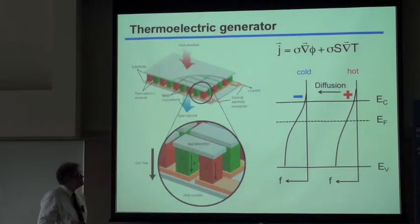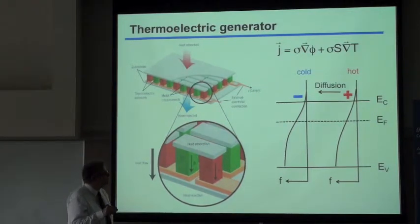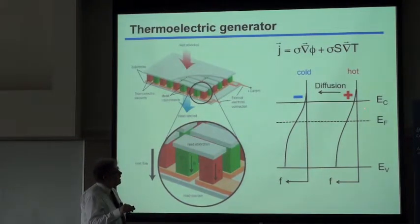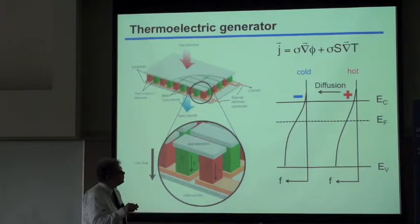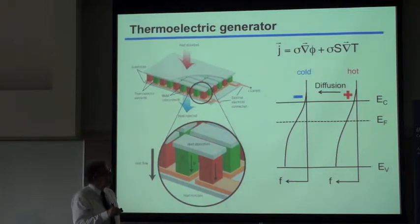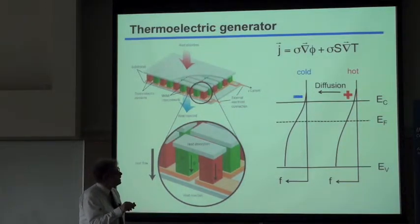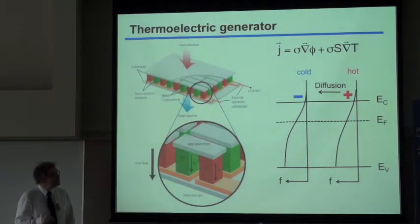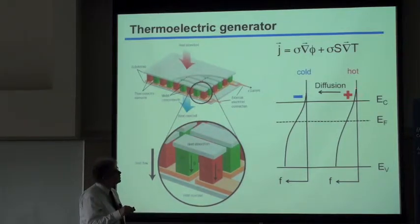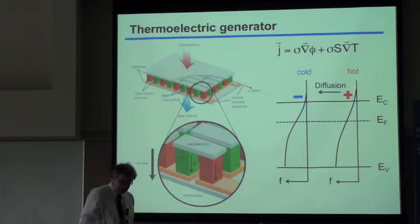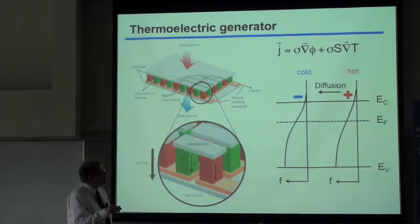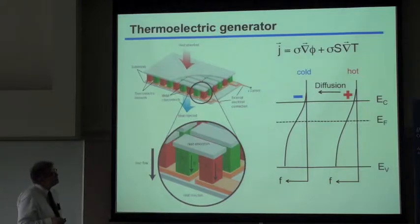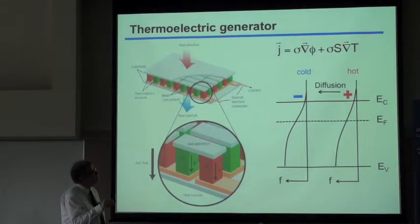One end of the semiconductor is hot and the other is cold. Therefore I have two Fermi distributions — a broader one at the hot end and a narrower one at the cold end. The result is that I have more electrons thermally activated at the hot end than the cold end. Since I have a difference in electron concentration, there will be diffusion: additional electrons move toward the cold end, leading to local space charges and an additional electrical field, which then drives a current.